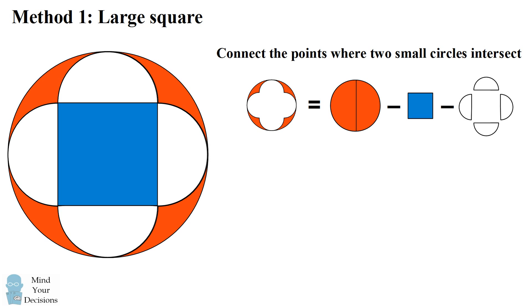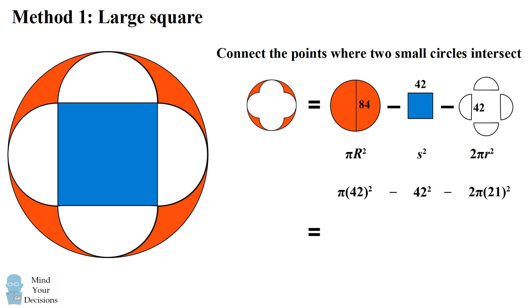The large circle has a diameter of 84, and each of the small circles has a diameter that's half as long, so it's 42. The square has a side that's equal to the diameter of a semicircle, so its side is equal to 42. A circle has an area of pi r squared, and a square has an area of s squared. The four semicircles are equal to two circles. Substituting in the dimensions of each of these shapes, we end up with an expression for the area of the shaded region. The answer will be 882 pi minus 1764, which is approximately 1,006.885.